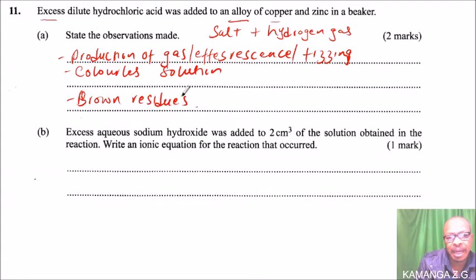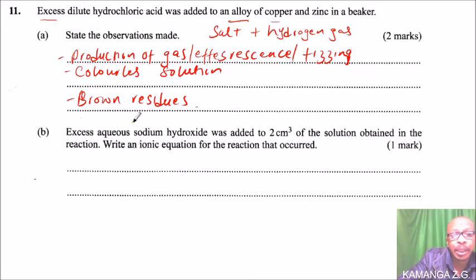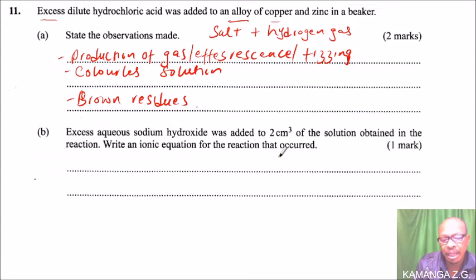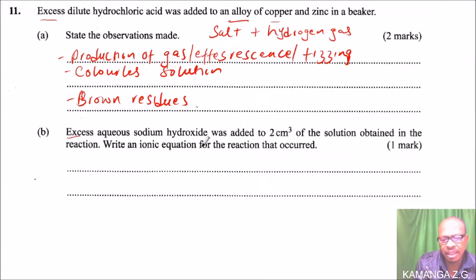The brown residue is the remains of copper after zinc reacts with the excess dilute hydrochloric acid. Part B: we are told excess aqueous sodium hydroxide was added to two centimeter cubes of solution obtained in the reaction above — write an ionic equation for the reaction that occurs. Note that the word 'excess' is very important.